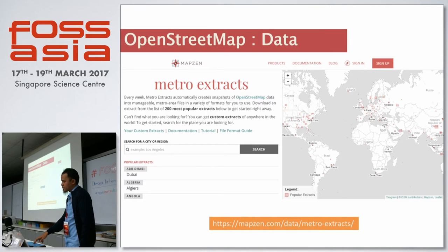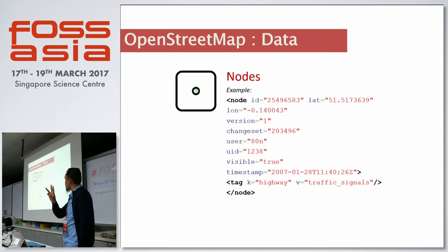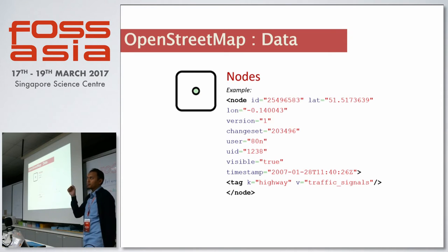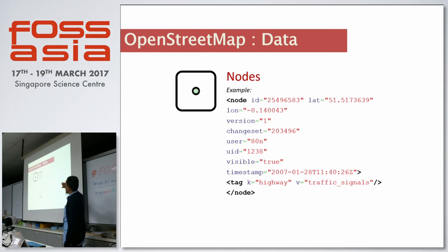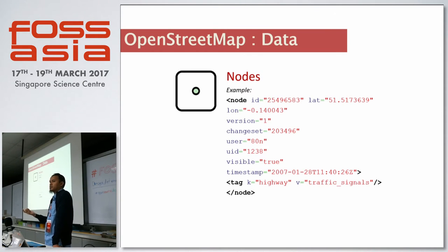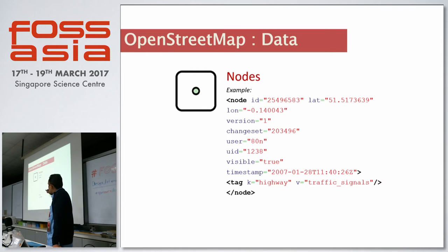The structure of the data has only three types. The first is a node — basically a point, like a cafe, restaurant, or hospital. Every node has an ID, latitude and longitude, a version number (so if people make mistakes they can refer to the previous version — which also handles map vandalism by reverting to a previous version), a changeset, the user who made the edit, the user ID, and a timestamp for when the data was added. The second type is ways — a series of nodes that form a line. Ways can be open ways, closed ways, or areas. Every way also has key-value pairs, for example highway=residential.